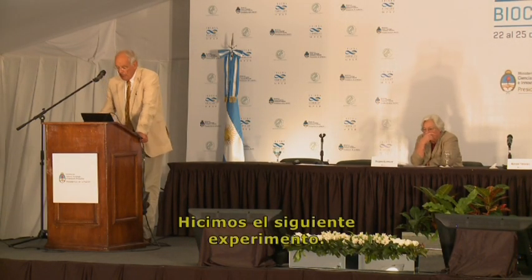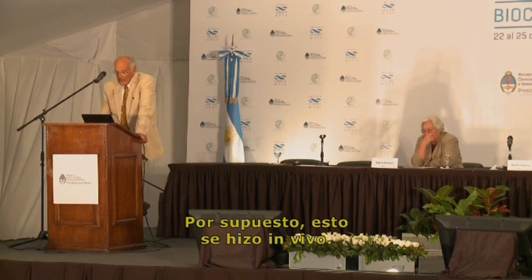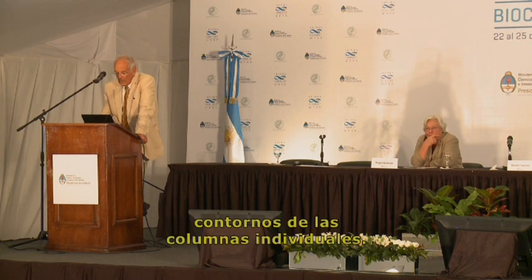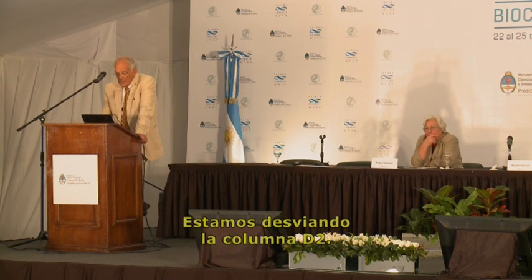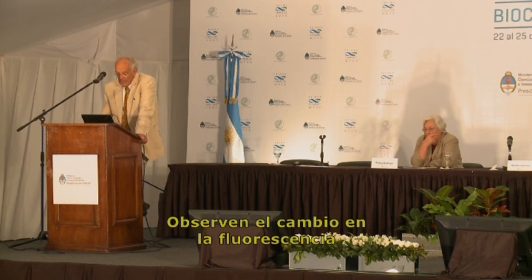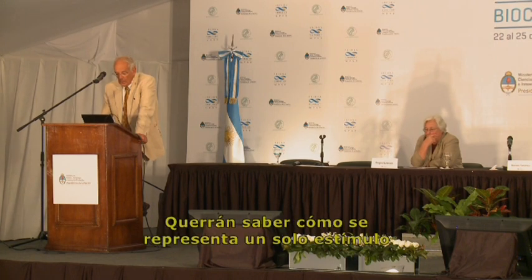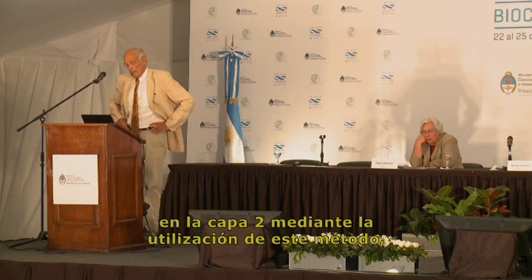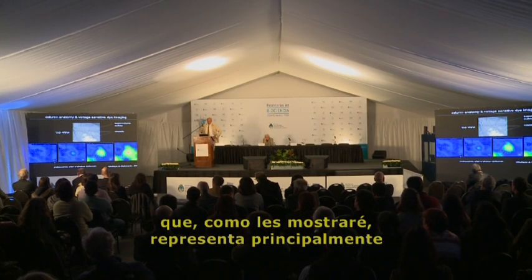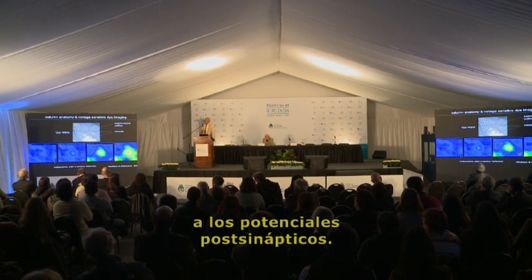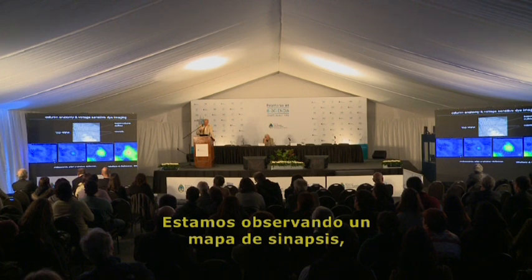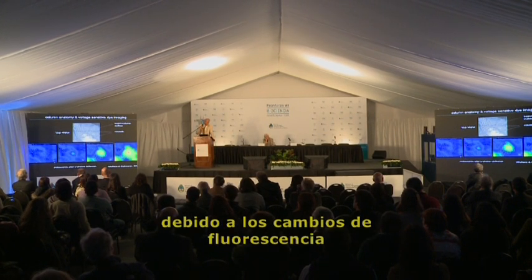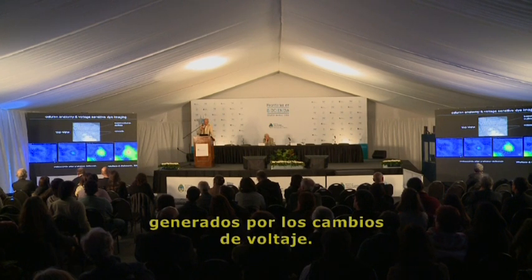We did the following experiment. This is done in vivo. Here you see a view onto the vibrissae cortex. In white you see the outlines of the individual columns. We are deflecting the D2 column and watching the change in fluorescence as a function of time. We want to know how a single stimulus is represented in layer 2 using this method, which represents mostly post-synaptic potentials. So we are looking at a PSP map, or an input map, into layer 2 — not the output map, the input map.